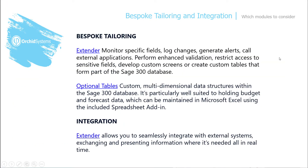The three modules to consider if you're looking at bespoke tailoring and integration are Extender, Optional Tables, and Extender once again for integration. Extender allows you to monitor specific fields, log changes, generate alerts, call external applications, perform enhanced validation, restrict access to sensitive fields, develop custom screens, and create custom tables that form part of your Sage 300 database. All customizations reside in the database, so they go along with any backup and restore.